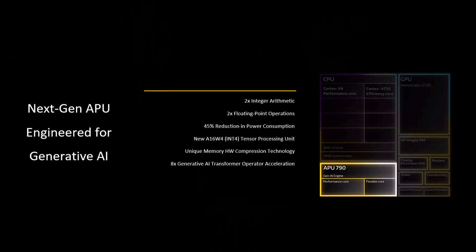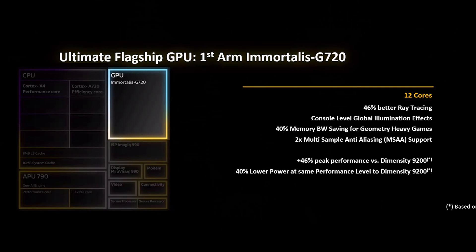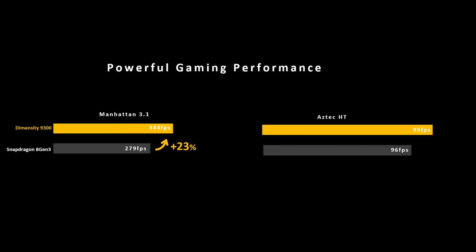Lots of memory is usually required for this kind of processing, so MediaTek uses a technology called Advanced Hardware Compression to take the required usage from 13GB and compress it down to 5GB, freeing up memory for other processes. Gaming and camera tech is not sacrificed whatsoever, with this chip bringing 46% better ray tracing on mobile and increasing the cores from 11 to 12. That means you will get console-level global illumination effects on mobile, but the power requirements drop by 40% from the 9200.